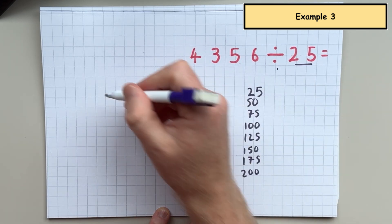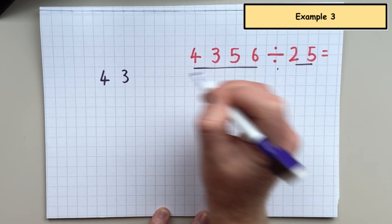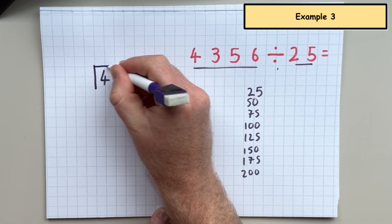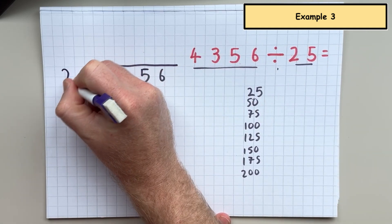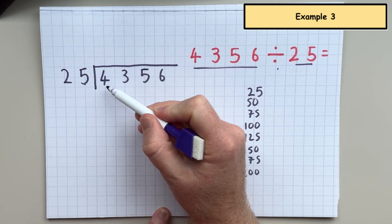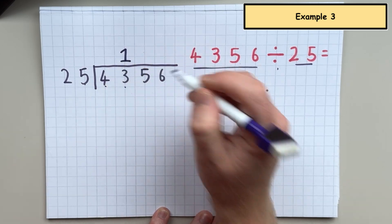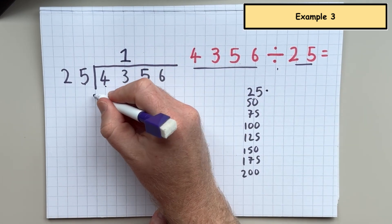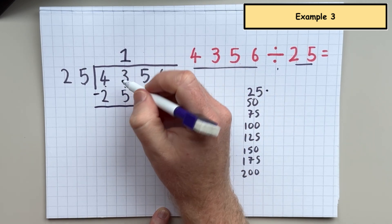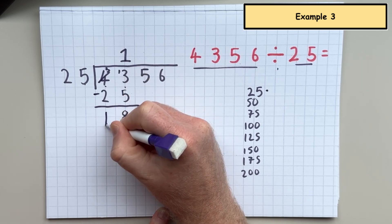So we're dividing 4,356. We're dividing it by 25. So the first thing I'm going to say is how many 25s in 43. So there is one 25 in 43. So I'm going to take away 25.